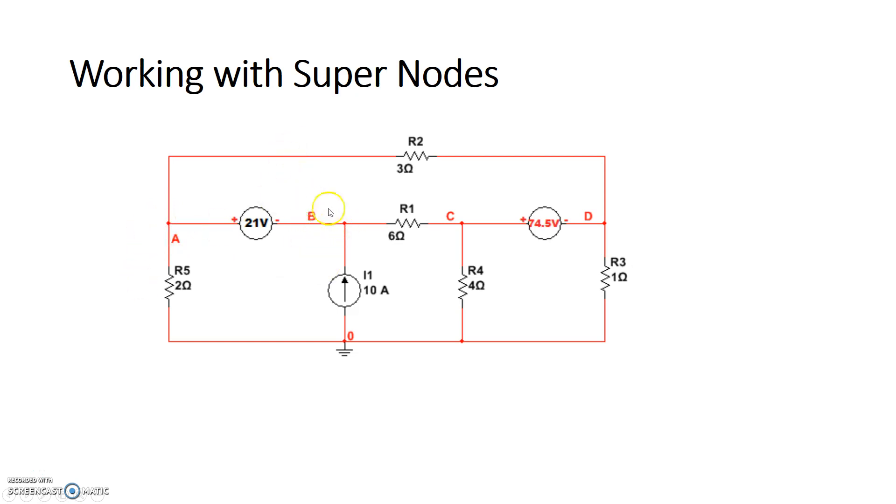So, this kind of voltage source, which lies between two important nodes, also called essential nodes, and there's no other element there except for that voltage source, that kind of voltage source topology is called a supernode. If you look at this particular voltage source, 74.5 volts source, you see the exact same thing.